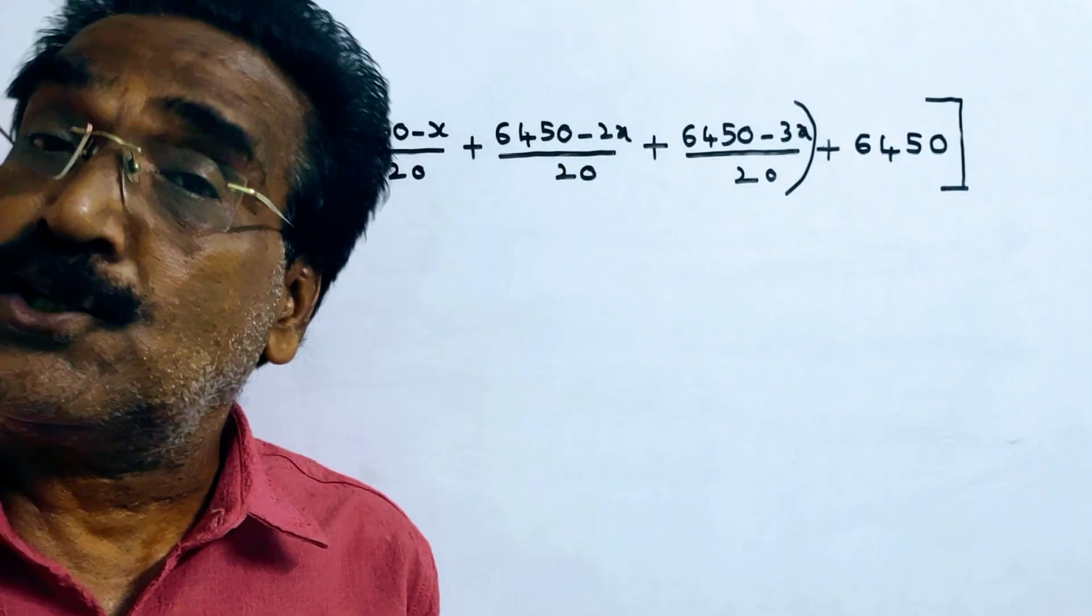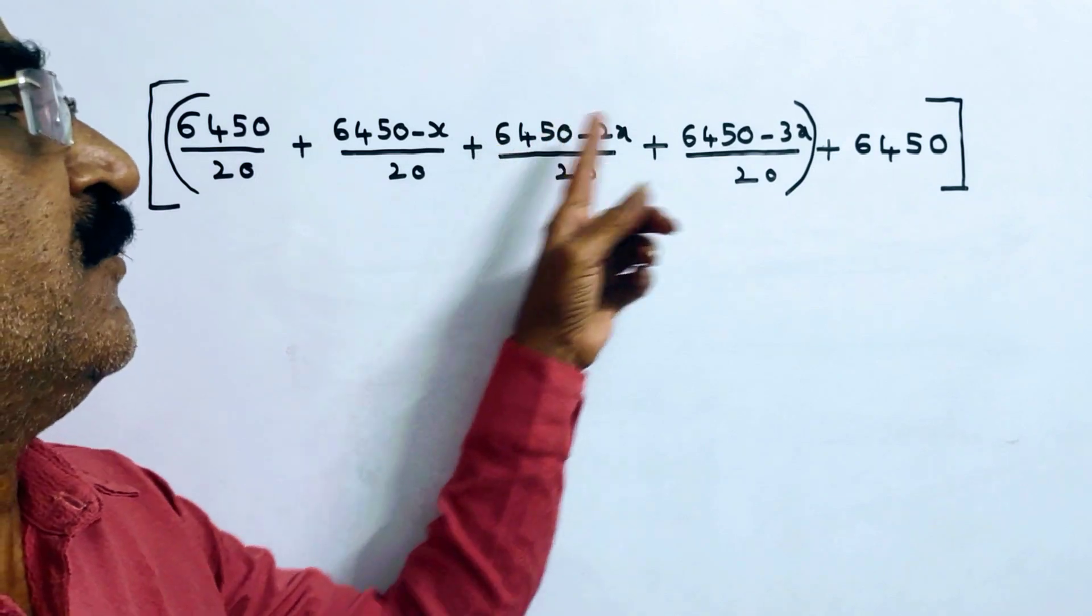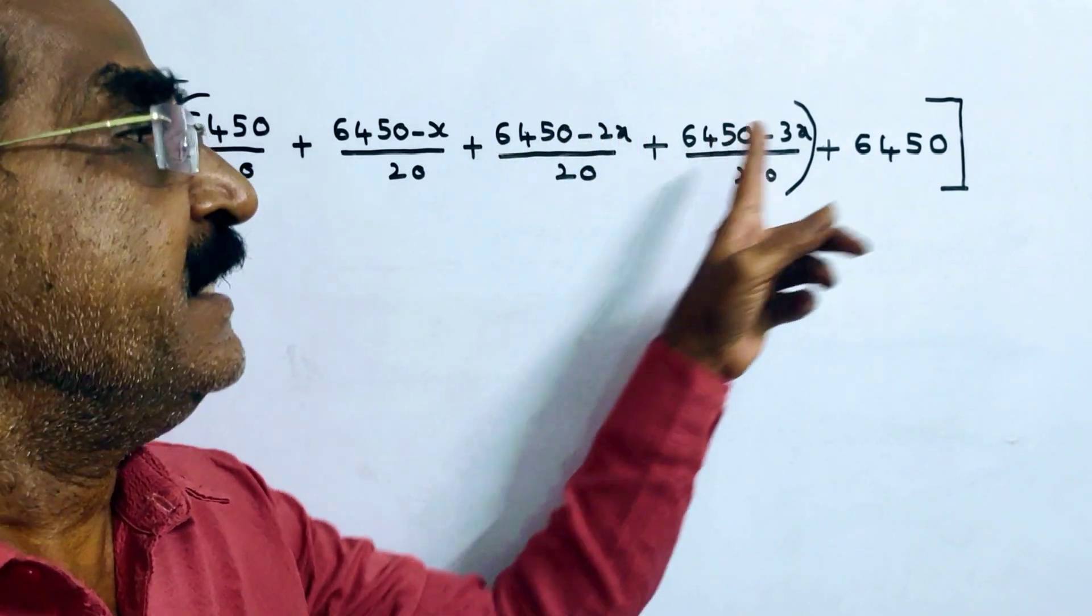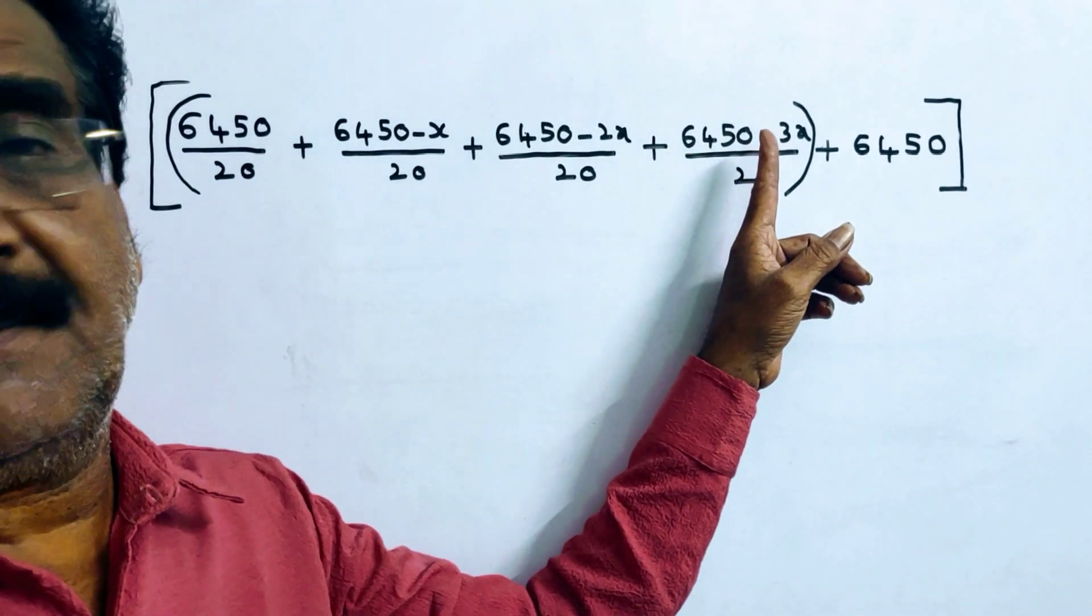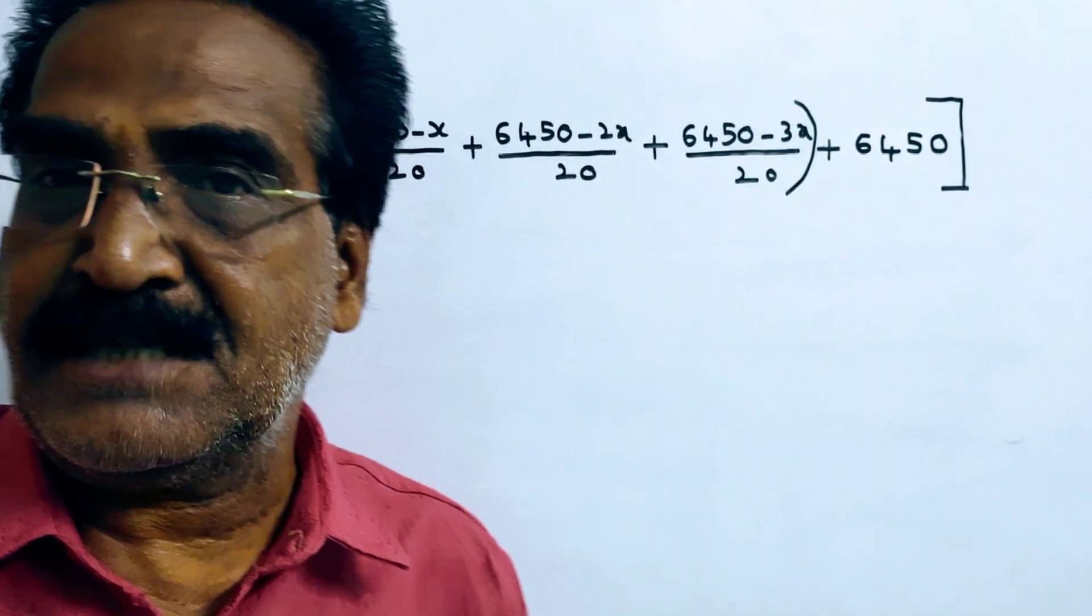For the third year, he pays 2 installments, so the interest is 6450 minus 2X by 20. And for the fourth year, he pays 3 installments, so the interest accrued will be 6450 minus 3X by 20.